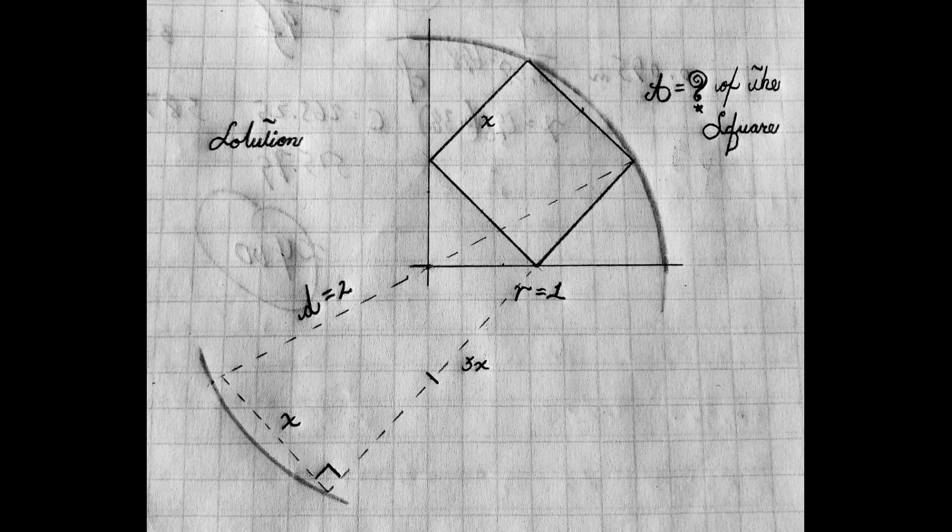you're going to come out with, I believe, 0.632. If you take the area of those squares and you divide it by the area of that circle, which will be pi, literally 3.14, you'll come out with the same 0.632.